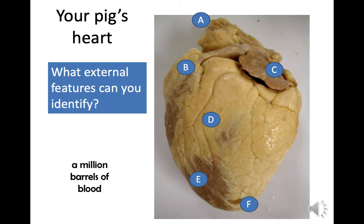On the screen is a pig's heart. What external features can you identify? There are labels A, B, C, D, E, and F — try to see if you can do it from memory. You can also have a go at: how much blood does the heart pump in a lifetime? Write down your number and a unit.